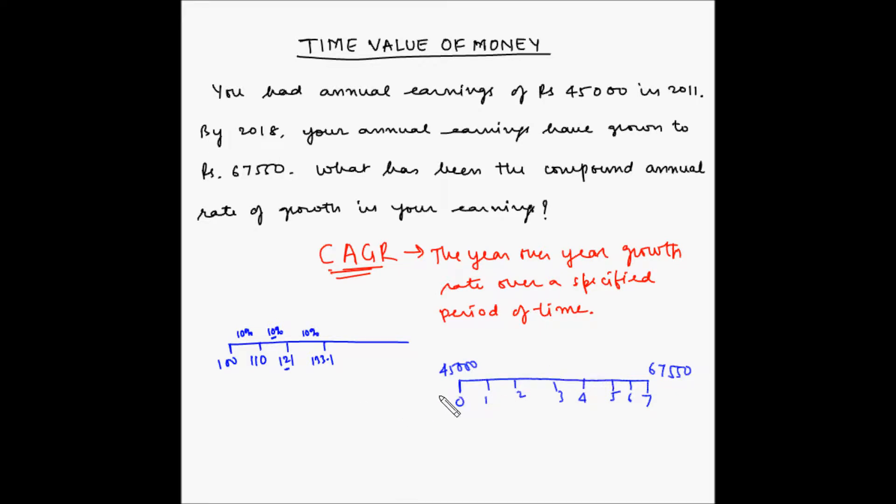So I generally use the formula for compound interest to calculate the CAGR because basically that is also compounding. So A equals P times (1 plus I) to the power N. So this is the final amount, this is the current amount, this is the rate of interest, and this is the tenure or the number of compounding periods. So here we have to find out I, what is the growth rate?